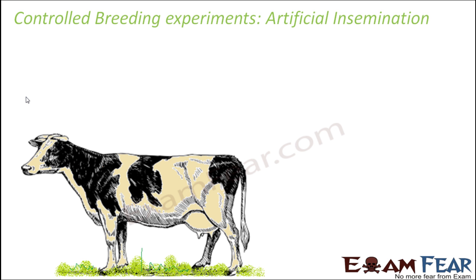Now we will talk about some controlled breeding experiments — that is, some artificial techniques of breeding. So how can we actually artificially make an animal reproduce? How is that done?